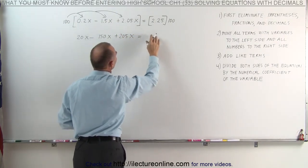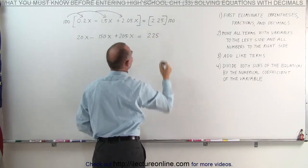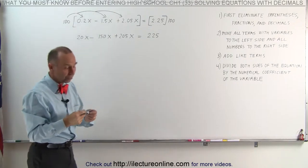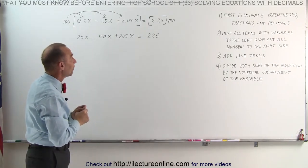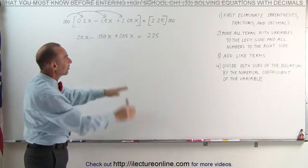On the right side, again we multiply, the decimal place moves over two places, we get 225. At this point, we continue with the second step, we move all the terms with the x to one side, and everything else to the right side of the equation.